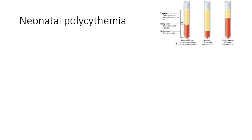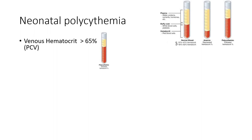Neonatal polycythemia is defined as venous hematocrit or PCV greater than 65%. Increased hematocrit causes increased blood viscosity, making circulation difficult. Small thrombi can also form, depriving vital organs of circulation, making treatment necessary.